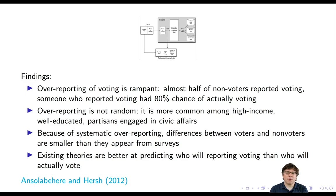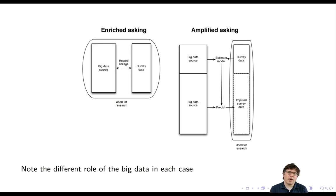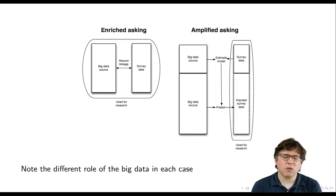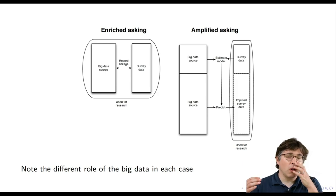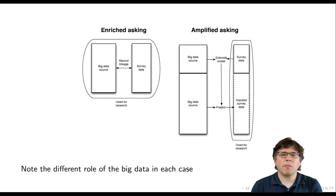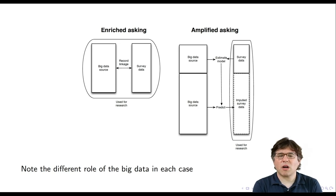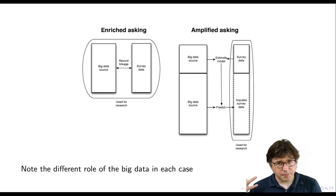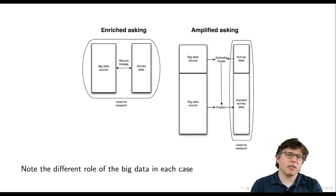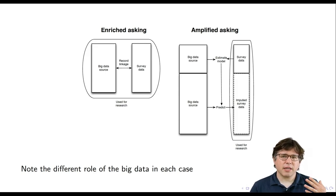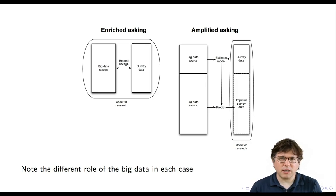This is a good example of this first way of combining survey data with big data sources, which I call enriched asking. In this particular paper, the role of combining these two things was to validate the survey data. But a much more common way you'll see enriched asking is using the survey data to collect information that was not collected in the big data source — since big data sources are often incomplete and don't collect what you'd want as a researcher, you can collect that extra information and merge it onto the big data source. The second pattern is what I call amplified asking.